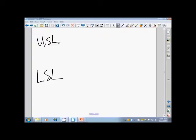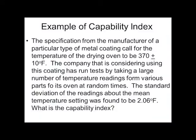So if we go back to chapter three, and if we take a look at slide number 17, we have an example that we're going to be working here with the capability index. It says the specification from the manufacturer of a particular type of metal coating, call for the temperature of the drying oven to be 370 degrees, plus or minus 10 degrees Fahrenheit. The company that is considering using this coating has run tests by taking a large number of temperature readings from various parts of its oven at random times. The standard deviation of the readings about the mean temperature setting was found to be 2.06 degrees Fahrenheit. What is the capability index?